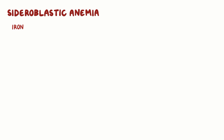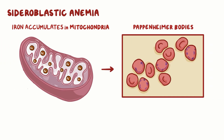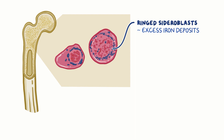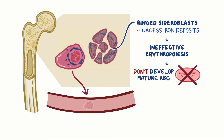These causes of sideroblastic anemia stop the iron from being incorporated to form heme, which allows the iron to accumulate in the mitochondria, resulting in Pappenheimer bodies seen on blood film. In the bone marrow, immature RBCs' mitochondria surround the nucleus and get laden with excess iron deposits, which produces ringed sideroblasts on histology, hence the name of the disease. These sideroblasts have ineffective erythropoiesis, which means they don't develop normally to become a mature RBC and end up dying in the bone marrow, with a few escaping into the peripheral blood.